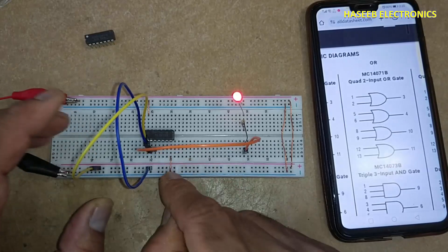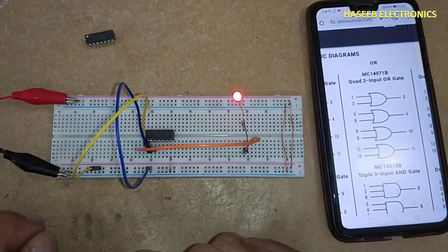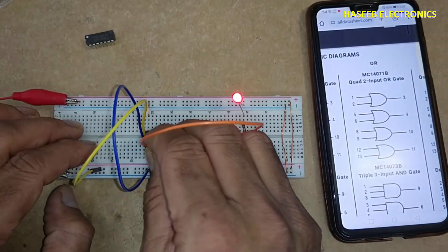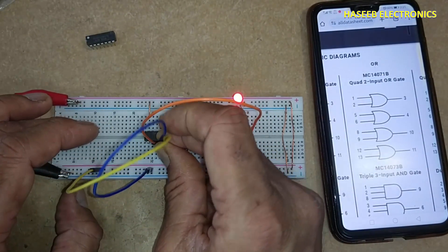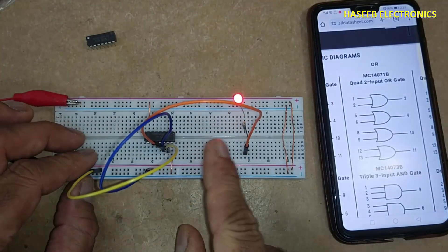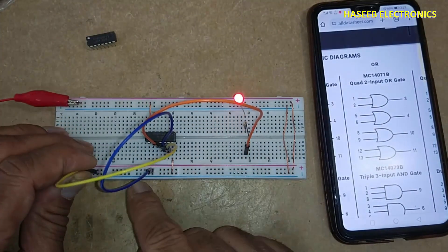Both inputs high, output high. Second gate output from pin number 4. Both inputs high, output high. Any one high, output high.